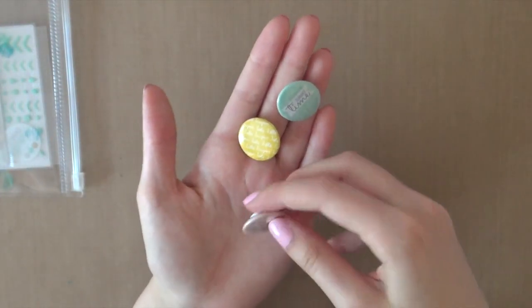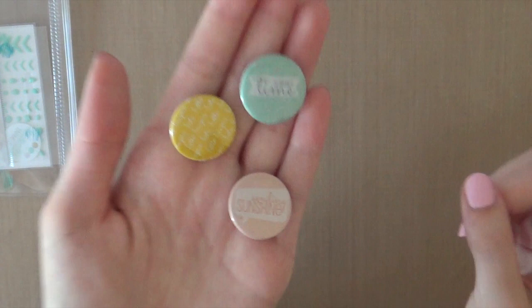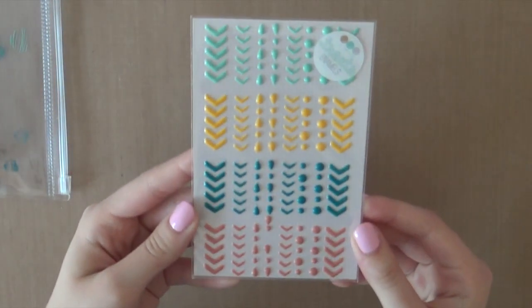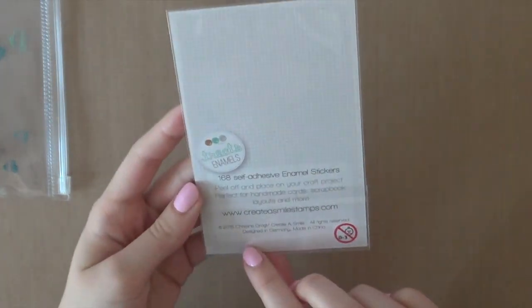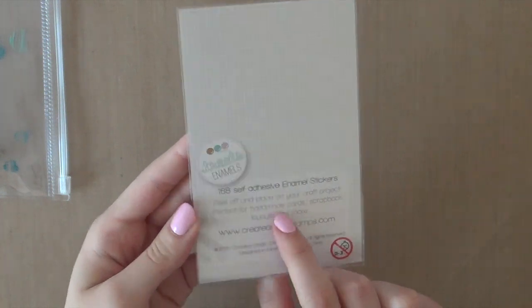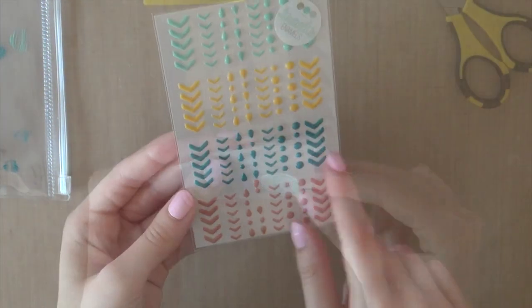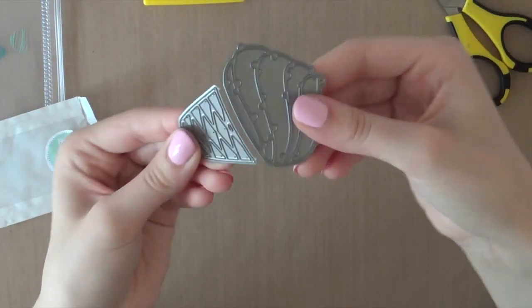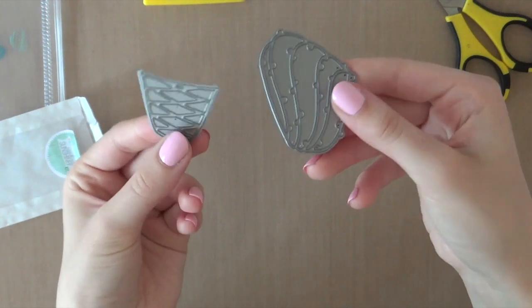Then there are also three flare buttons included in this kit and they match the pattern papers beautifully. And then you also get a pack of enamel shapes or stickers. There are four different colors and they also match the colors of the pattern paper so everything matches together beautifully.